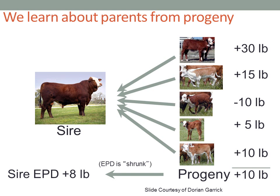We learn about parents or sires from their progeny. In this simple example, a sire produced five calves across varying contemporary groups. The top calf had a 30-pound advantage at weaning compared to his contemporaries, the next had a 15-pound advantage, and the next was actually 10 pounds below average. Averaging these, we get a 10-pound advantage for this sire's calves compared to their contemporaries — and that becomes the foundation for an expected progeny difference.